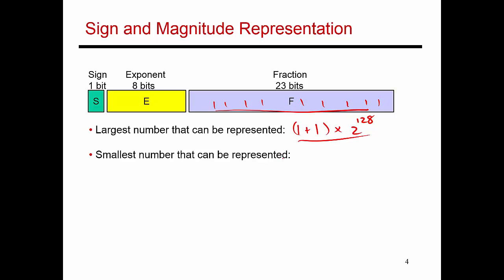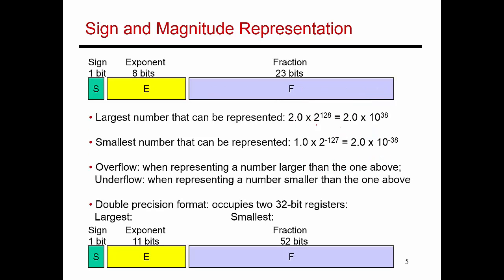The smallest magnitude number is going to be the implicit 1 that I mentioned, plus the fraction bits all being 0 times the smallest exponent, which is 2 to the power minus 127. So I spell that out over here.